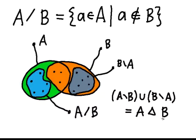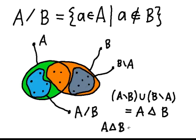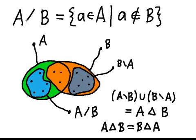We call it the symmetric difference because of the symmetry you see on the picture — the way we've dealt with A is the same as the way we've dealt with B in this definition. So A delta B is going to be the same as B delta A. The symmetric difference is a commutative operation, whereas the ordinary difference is not.